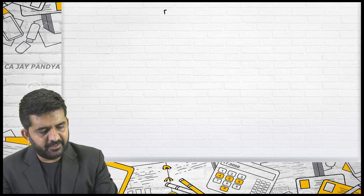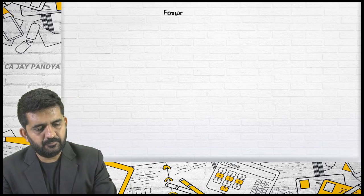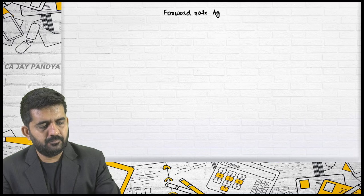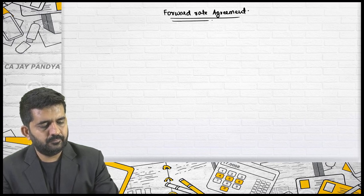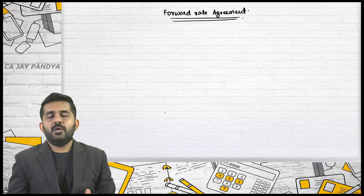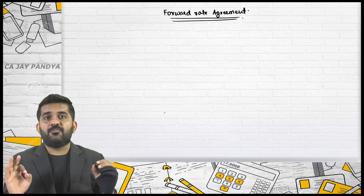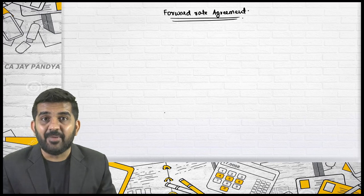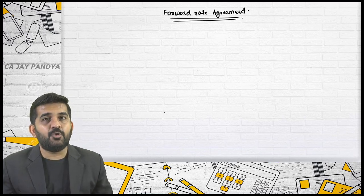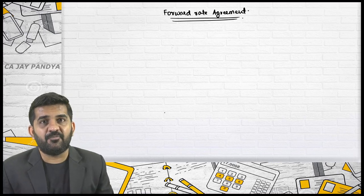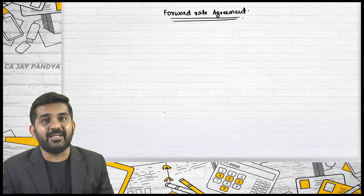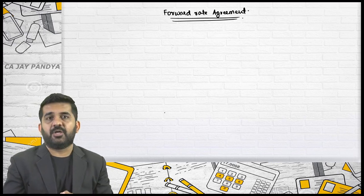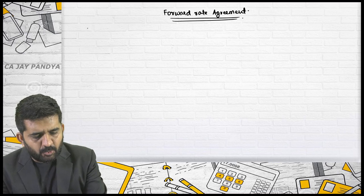What we will be starting is forward rate agreement. Try to concentrate on forward rate agreement. Why it came into picture? It is also one type of derivative. What exactly it is, it is somewhat difficult to understand. Try to concentrate over here.